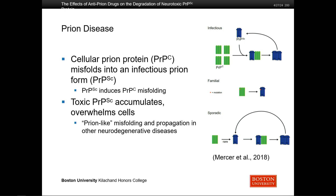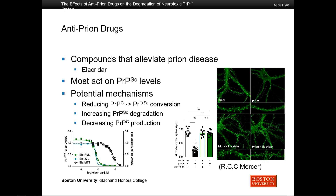This sort of prion-like misfolding and propagation is also implicated in other neurodegenerative diseases like Alzheimer's and Parkinson's disease. Anti-prion drugs are an important avenue of research. They are compounds that alleviate prion disease, and one discovered in our lab is alacridar. These drugs work by lowering the amount of PrPSc, the toxic form. There are a couple of mechanisms: they can reduce the conversion rate of normal PrPC to PrPSc, increase the rate of degradation, or decrease the amount of PrPC, which reduces how much can be converted to the toxic form.